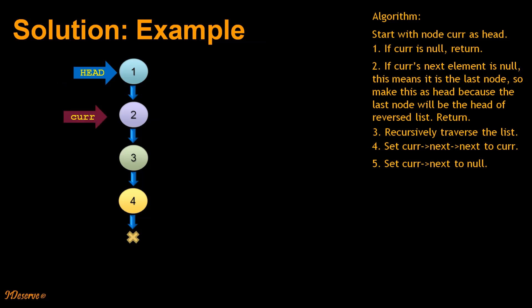Now current points to node 2. Again we check for the similar conditions in steps 1 and 2. Current is not null, current.next is again not null. So we recursively call for the next element.